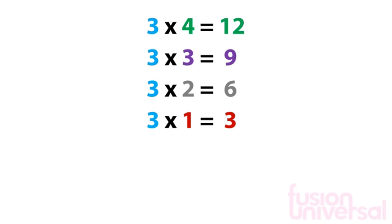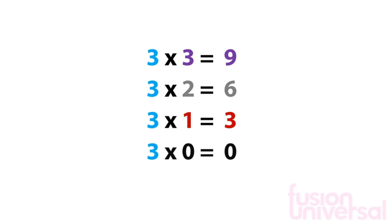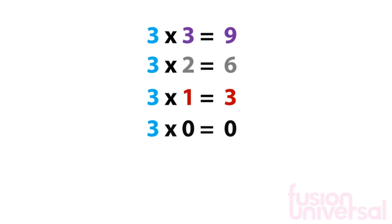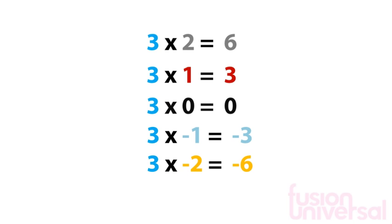We can keep reducing the number we are multiplying 3 by using negative numbers. Again, we would subtract 3 to give us negative 3, and we can start to generate a negative times table. If we look at this negative times table, we can see that a positive multiplied by a negative gives a negative product.